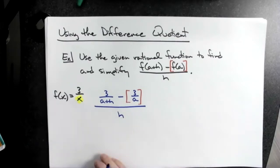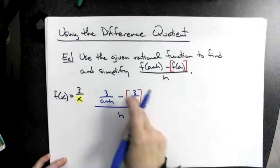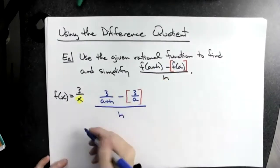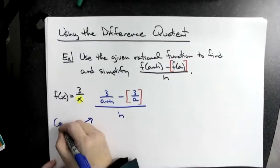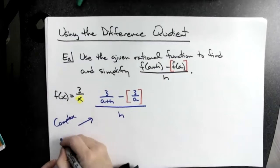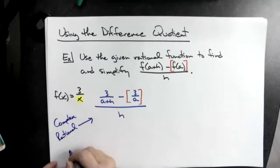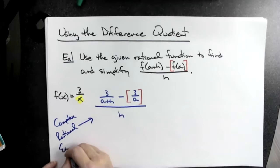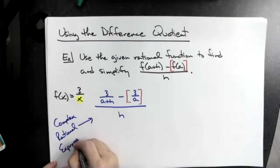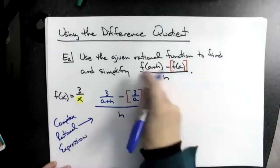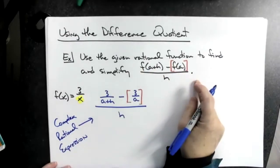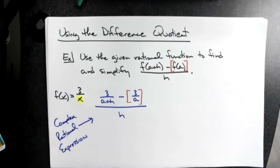By using this formula, I just created a complex rational expression, which is what we've been dealing with. I had to create it using the difference quotient formula — that's what I did. Now I'm going to simplify it.